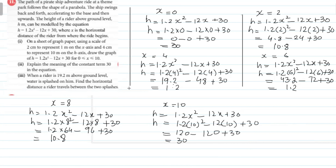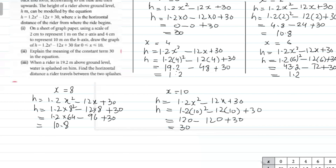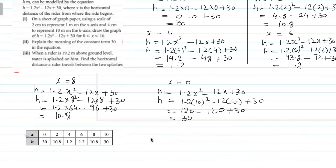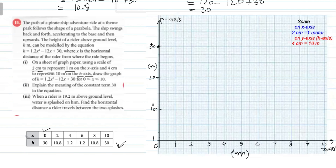اب یہ ہمارے پاس x کی values کے against h کی values form ہوگئی ہیں اور اب ہم یہاں table لکھ دیتے ہیں۔ x کی values لکھیں، اس کے against h کی values آ رہی ہیں۔ یہ میں نے graph draw کر دیا ہے اور اس کے according scale لکھ دیا ہے۔ اس scale اور table کے according graph draw کیا ہے۔ x اور h کی values positive ہیں تو negative values mention نہیں کریں گے۔